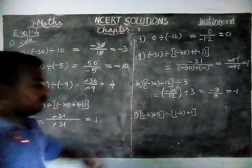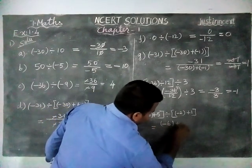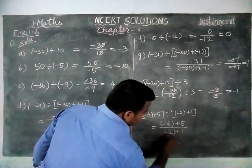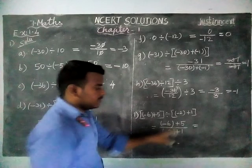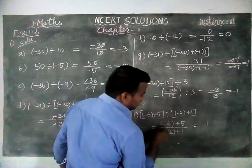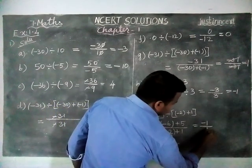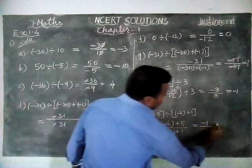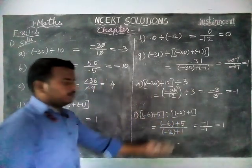Next, option I: minus 6 plus 5 in the numerator, and minus 2 plus 1 in the denominator. In the numerator, signs are different, so we find the difference: difference between 6 and 5 is 1. The greatest number is 6, and minus sign is in front of 6, so we get minus 1. In the denominator, signs are different, so we find the difference: difference is 1. The greatest number is 2, and minus sign is in front of 2, so we get minus 1. Both signs are the same — minus divided by minus — we get plus answer. 1 divided by 1 is equal to 1. So plus 1 is the answer.